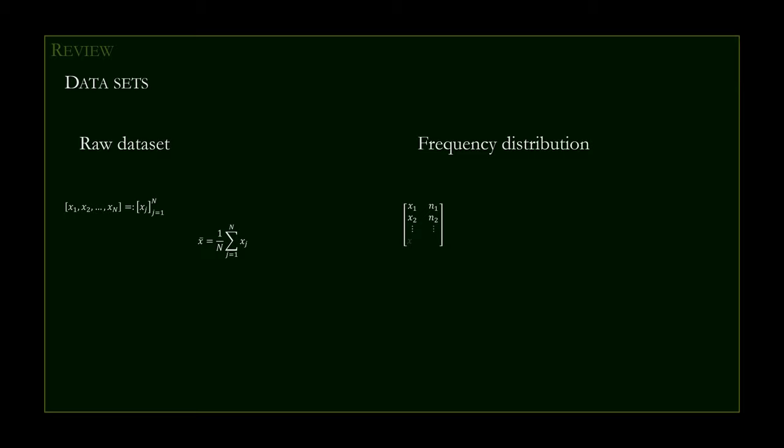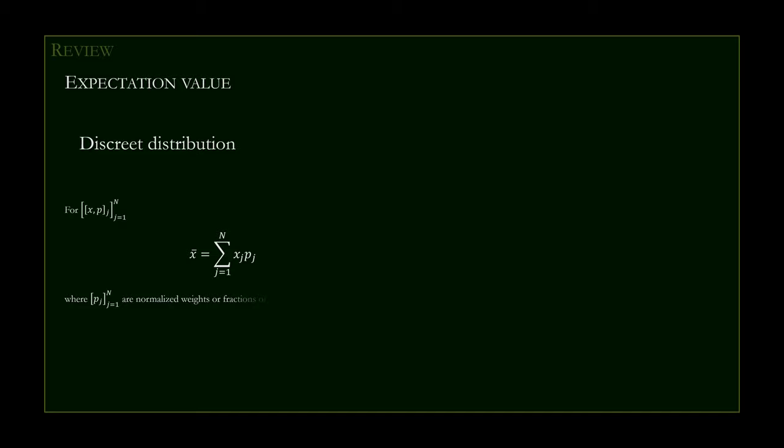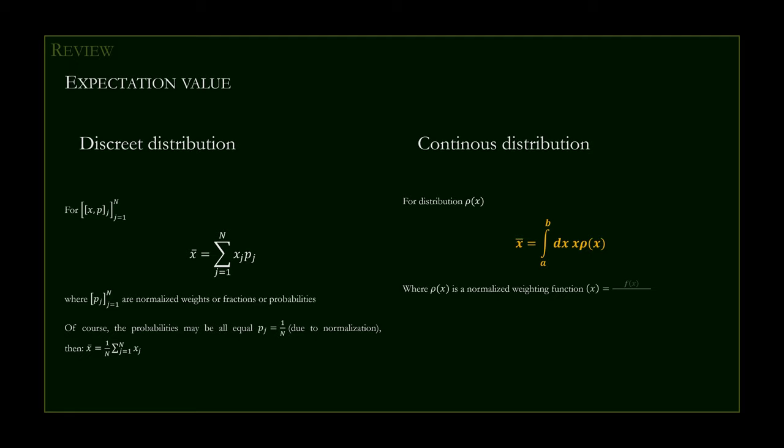Depending on how the data is provided — whether given in raw state or aggregated as a frequency distribution — they are entered slightly differently into the formulas for the mean. The mean is also the expectation value for a given probability distribution. For discrete distributions, it is a weighted mean calculated as before. For continuous distributions, the equivalent formula is valid, where in the place of probabilities we have a probability density function and discrete summation turns into continuous integration.